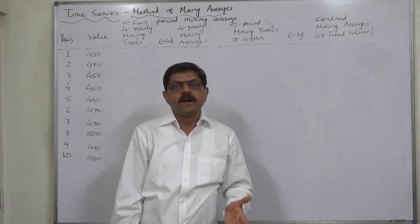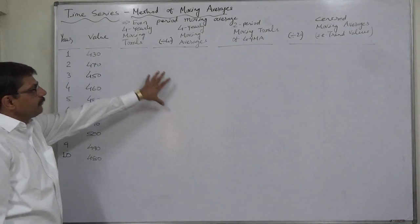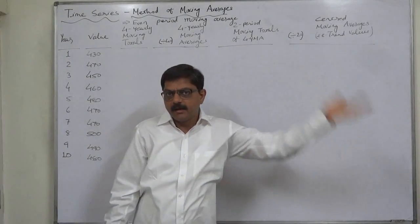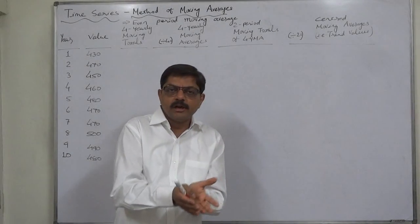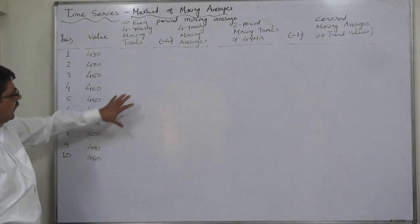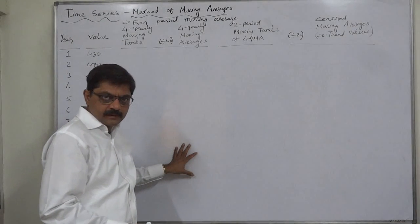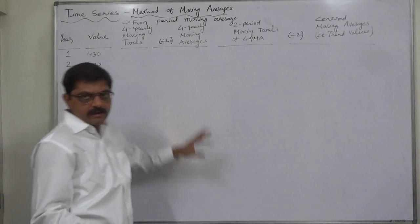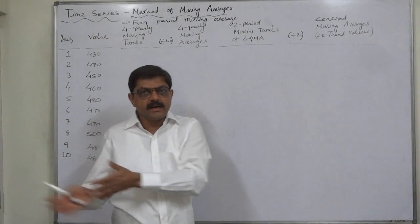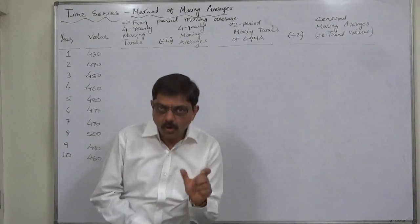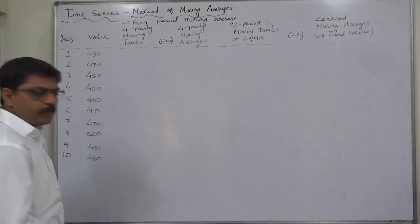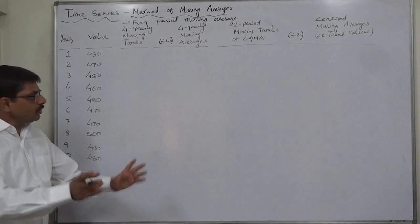The four-yearly, or even number of years, moving averages can be found in two steps. First, we have to find out the moving averages for the given period cycle, and then we have to further find out the two-period moving averages from those calculated moving averages. I will explain why when we calculate. The process of calculation is the same as for the odd number of periods — as in the previous lecture with the three-yearly cycle.